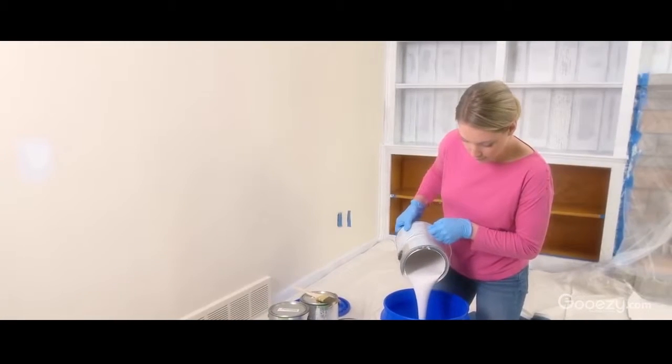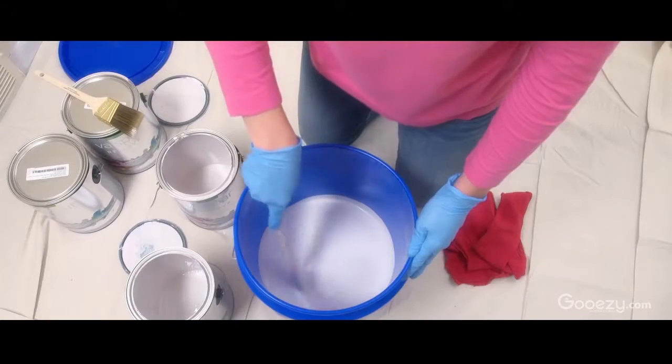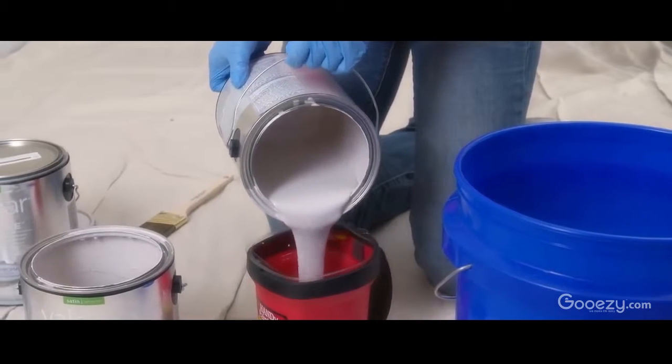If you're using more than one gallon, mix them in a five-gallon bucket to ensure color consistency. This is called boxing. A smaller cut bucket works great for the edges.